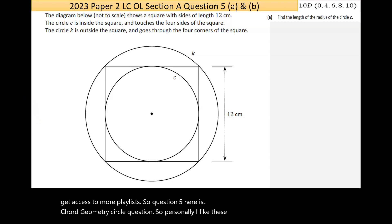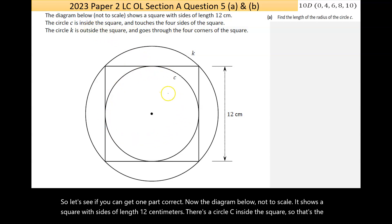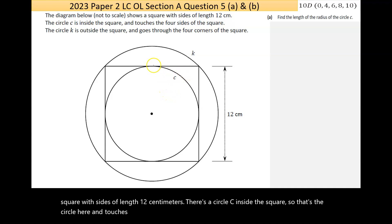Personally, I like these questions because they're kind of predictable although this one is a little bit diverse. The first one here is actually just two parts on the same scale, an 8-mark scale. With these kind of questions, normally if you get one part correct you get the high partial, so that's like in this situation eight marks. So let's see if you can get one part correct. Now the diagram below, not to scale, shows a square with sides of length 12 centimeters. There's a circle C inside the square, so that's this circle here, and touches all four sides of the square. The circle K is outside the square and goes through all four corners, so this circle K.